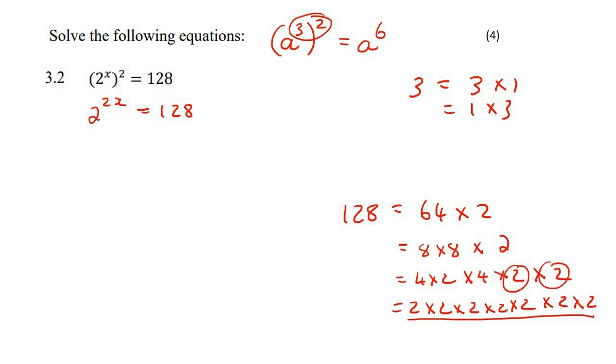All of the numbers are now broken down as far as they can, so we could now say that 128 is the same as 2 to the power of 1, 2, 3, 4, 5, 6, 7.